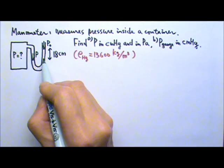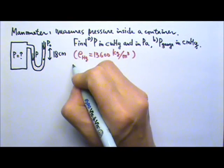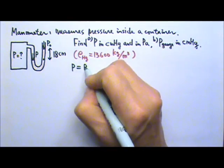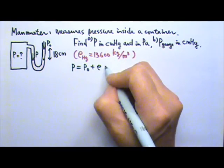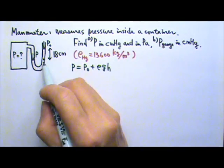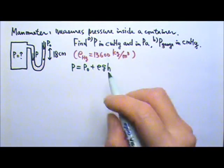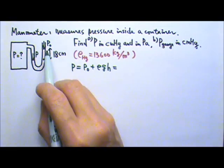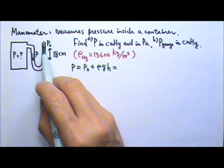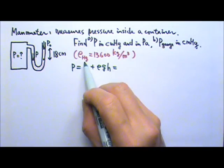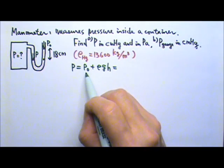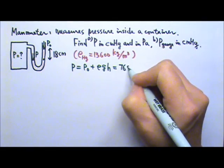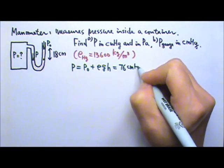Since the pressure on the two sides have to be equal, P, the pressure inside the container, would equal Po plus the ρgh of the mercury column. If I want this pressure to be in centimeter mercury, and the problem does not specify, we will use the standard atmospheric pressure for Po, which is 76 centimeter mercury.